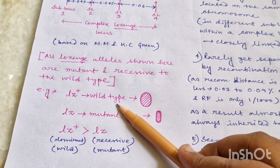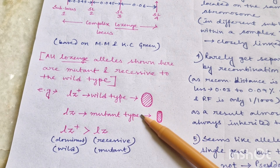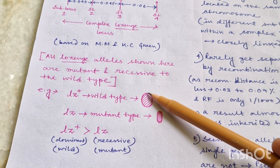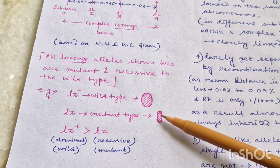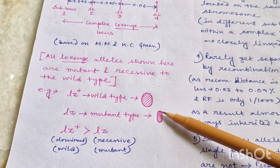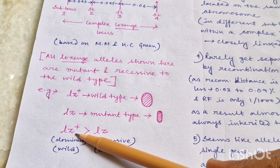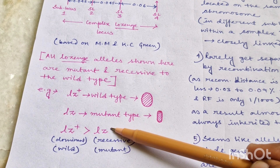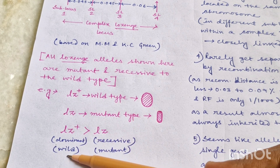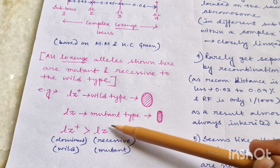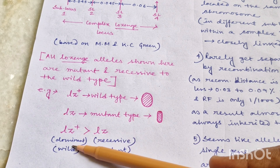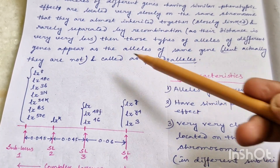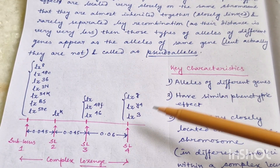The wild type allele called Lozenge locus is dominant over mutant alleles. LZ+ is the wild type allele which results in wild type eye shape of Drosophila, whereas LZ is the mutant allele which converts the wild type eye shape of Drosophila into a Lozenge shape. The wild type allele LZ+ is dominant over the recessive mutant allele LZ. So LZ is recessive, LZ+ is dominant. Whatever alleles are presented here — all of these are actually recessive, that means all of these are actually mutant alleles.